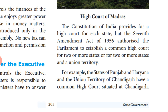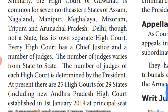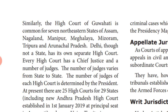The Common High Court is shared by most states and Union territories. For example, Punjab and Haryana and the Union Territory of Chandigarh have a Common High Court situated at Chandigarh. Similarly, the High Court of Guwahati is common for the seven North Eastern states: Assam, Nagaland, Manipur, Meghalaya, Mizoram, Tripura, and Arunachal Pradesh. So those seven states share one High Court.